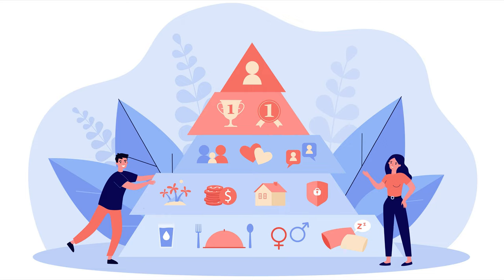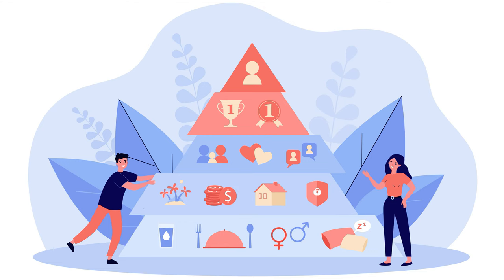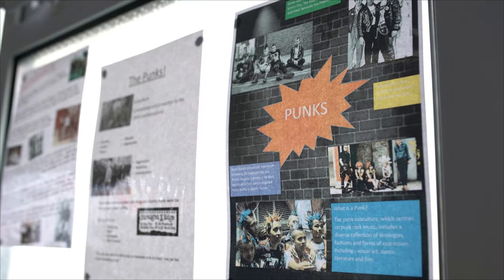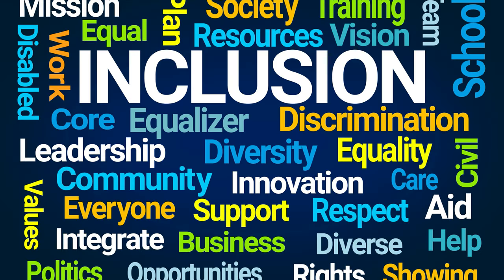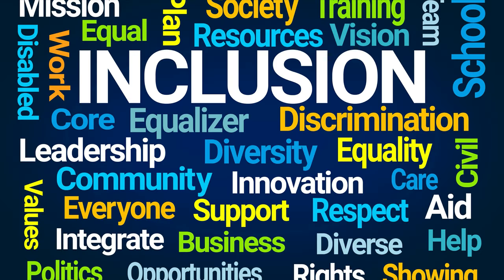The course consists of four units, two in each year, all of which are examined by extended writing, where you will be required to construct arguments demonstrating sociological knowledge and understanding and to evaluate the evidence before coming to a considered judgment.